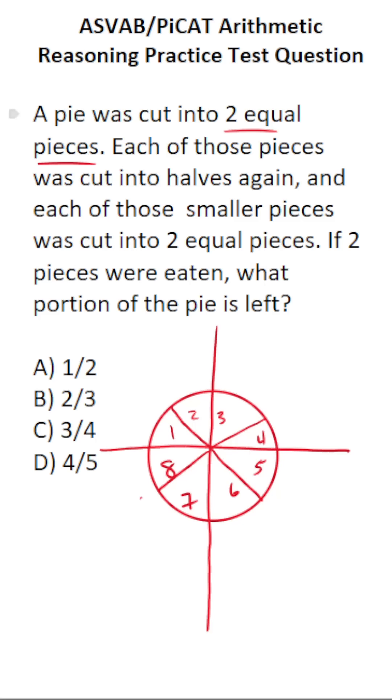All right, it says if two pieces were eaten, what portion of the pie is left? So the total pie has eight pieces. If two of them were eaten, that means you have six left. This isn't an answer choice because we can reduce this by a common factor of two. Six divided by two is three. Eight divided by two is four. So in other words, if two pieces were eaten out of the eight-piece pie, three-fourths of the pie is left.